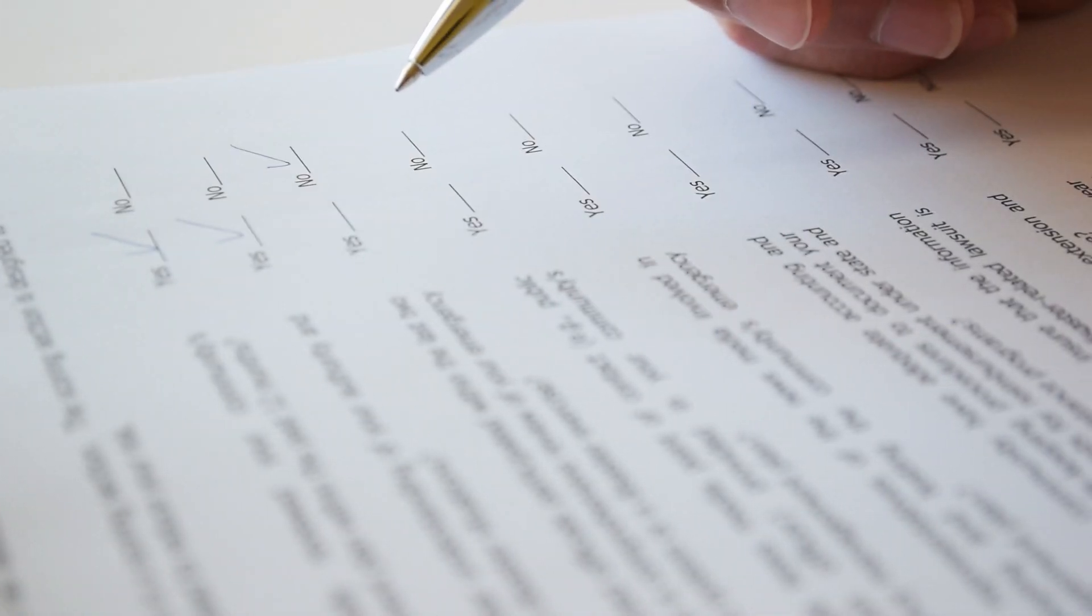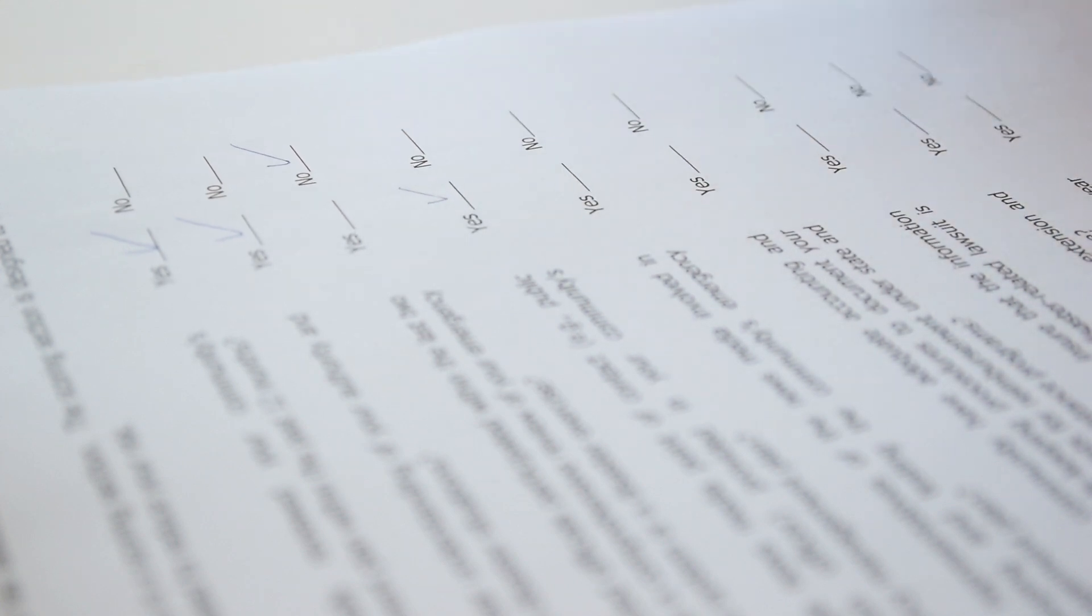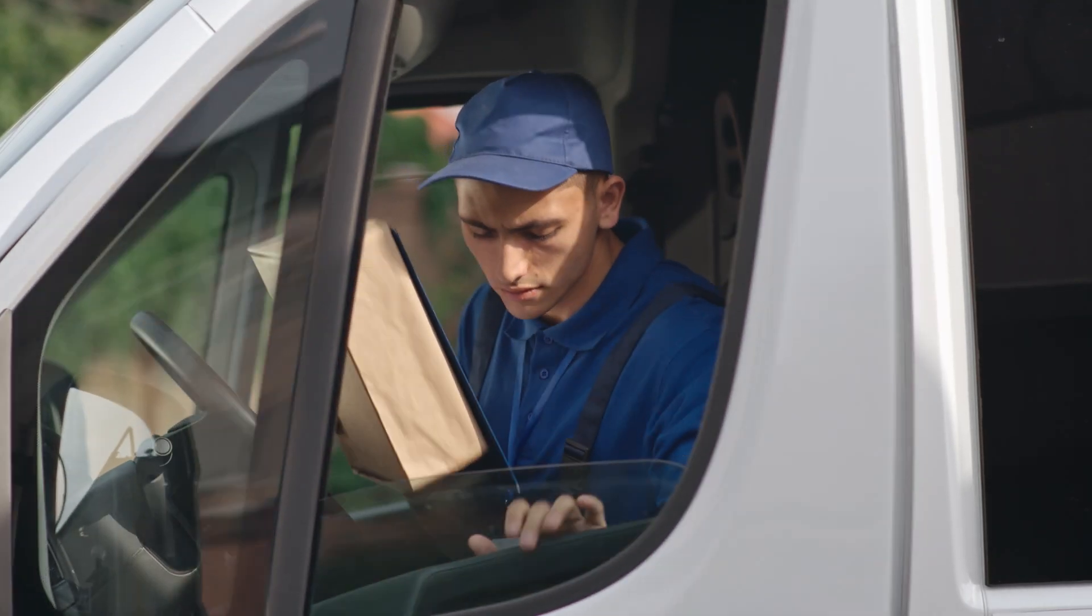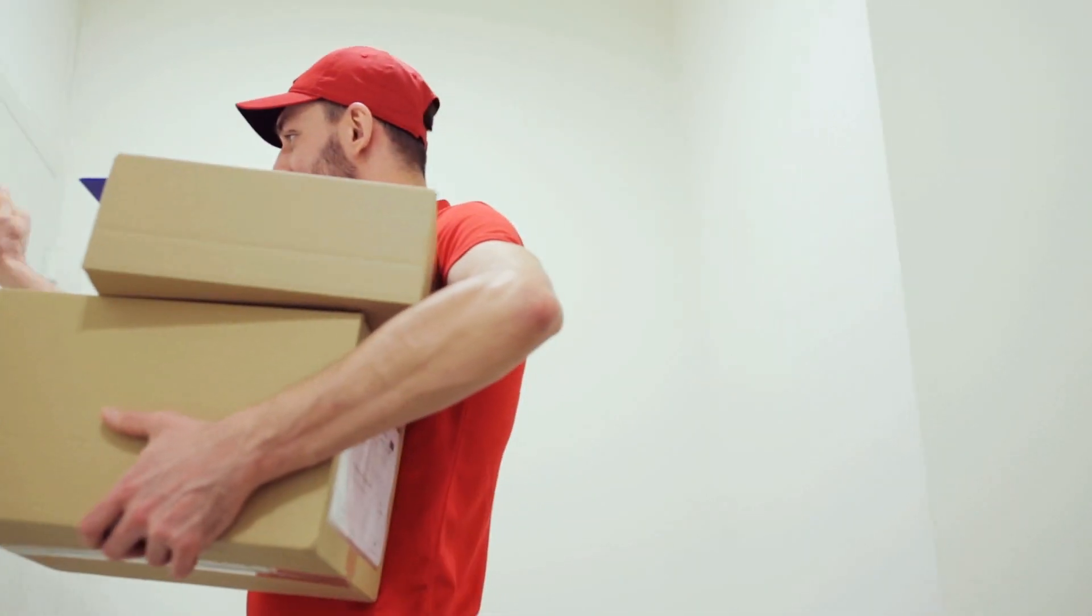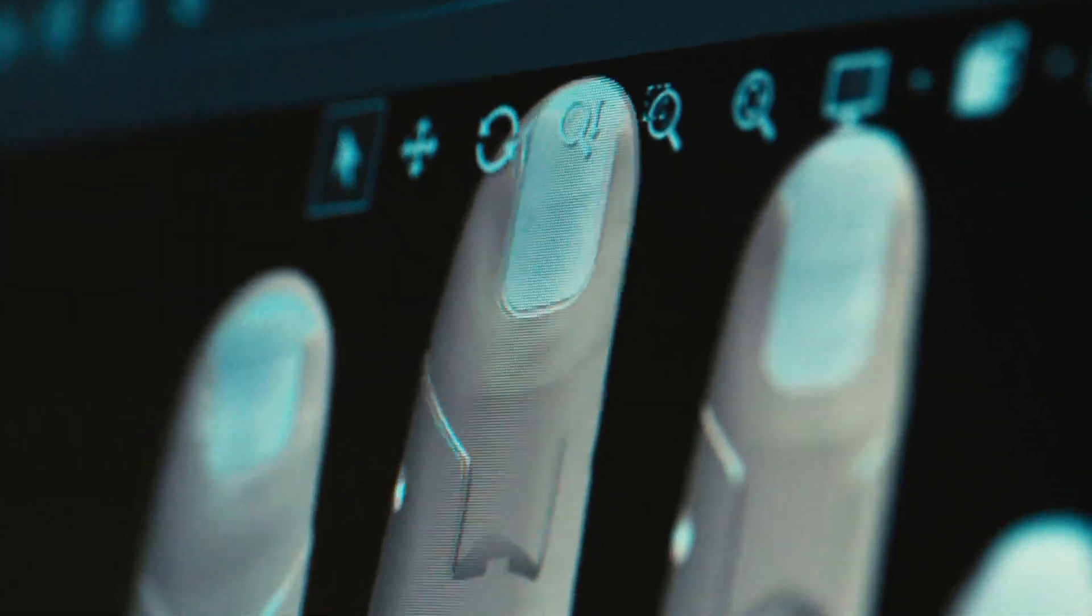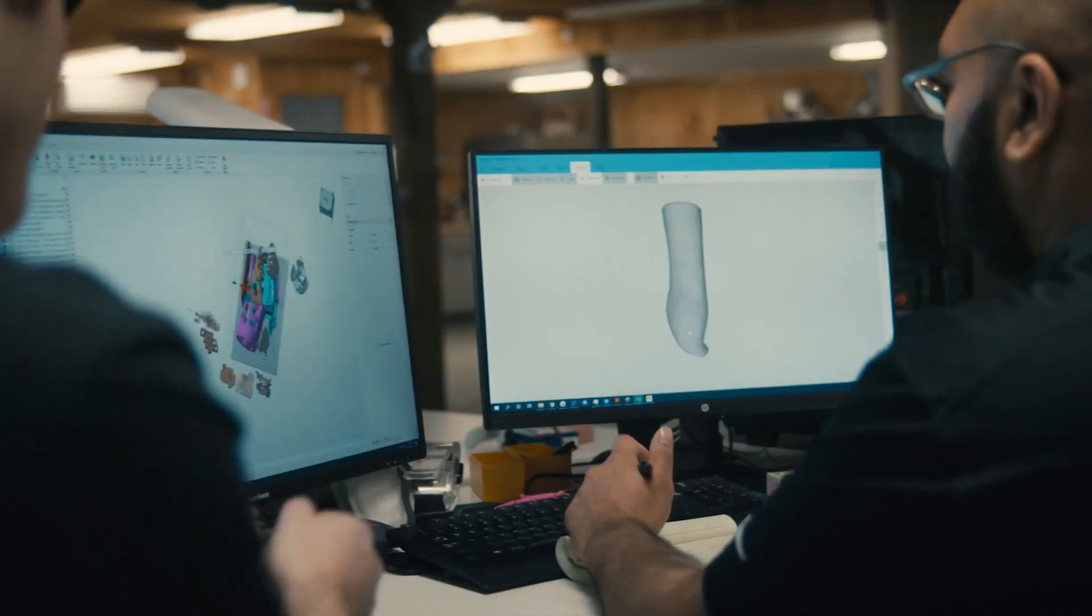First, Unlimited Tomorrow invites those who need a prosthesis to fill out a questionnaire. Based on this questionnaire, the company selects suitable candidates and sends them a 3D scanner directly to their homes, so that they can independently, or with the help of loved ones, scan a stump of an amputated limb without the direct involvement of a prosthetist.